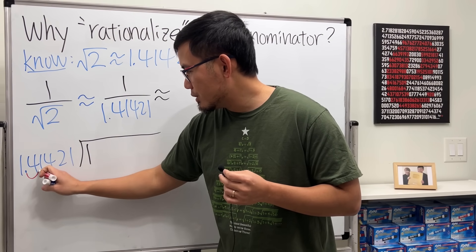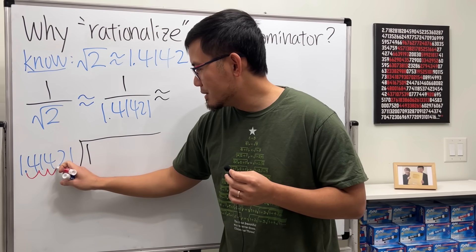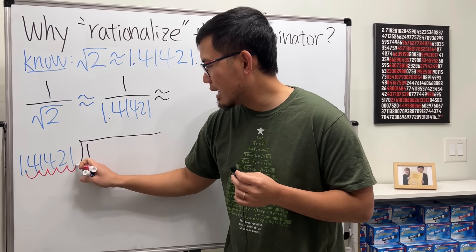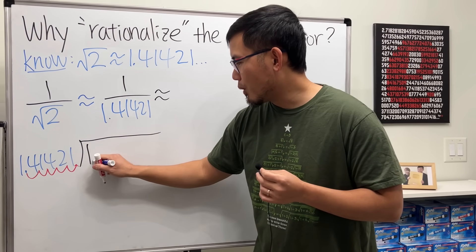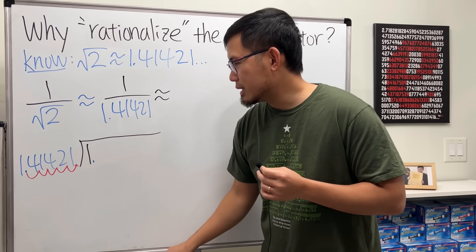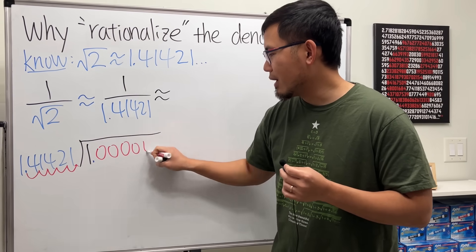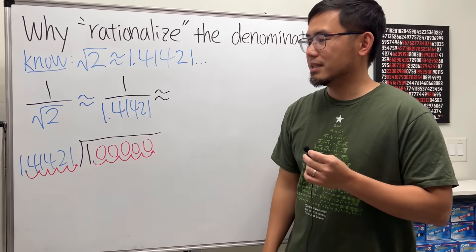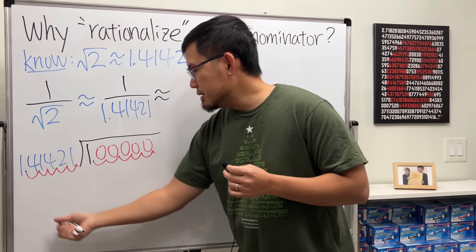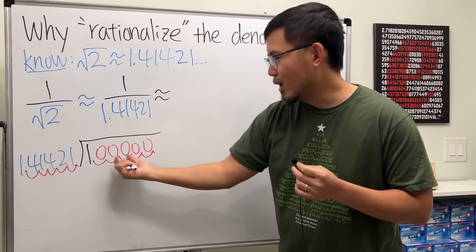How do we do long division when the outside is a decimal? We have to move it once, twice, three times, four times, and then five times. That means the inside is 1.0 right here, and we'll have to put five zeros because you also have to move the decimal point five times to the right. Now you're looking at 100,000.